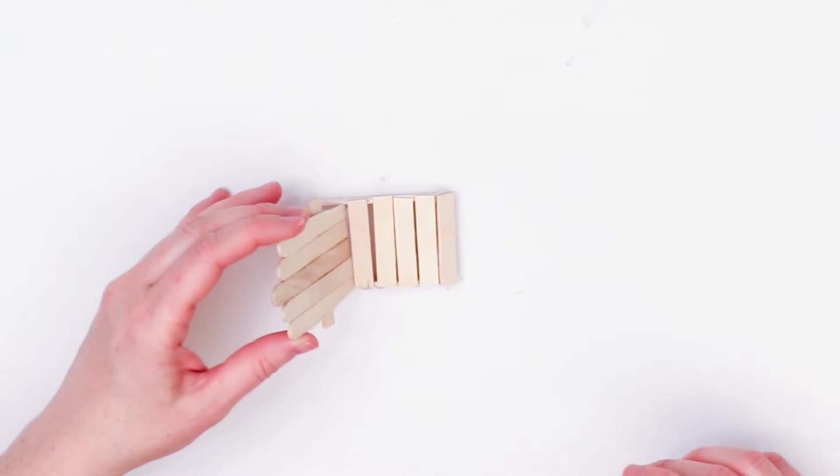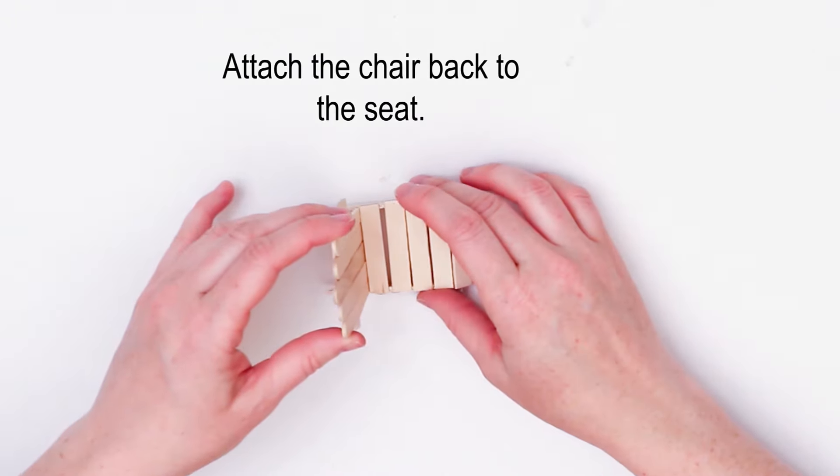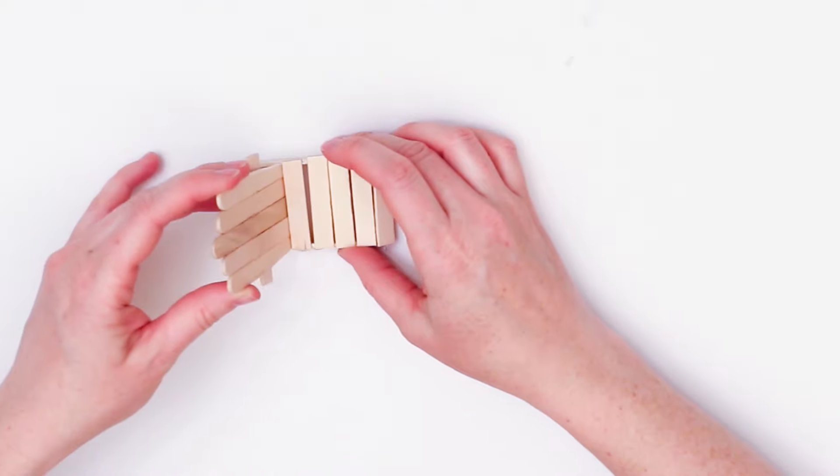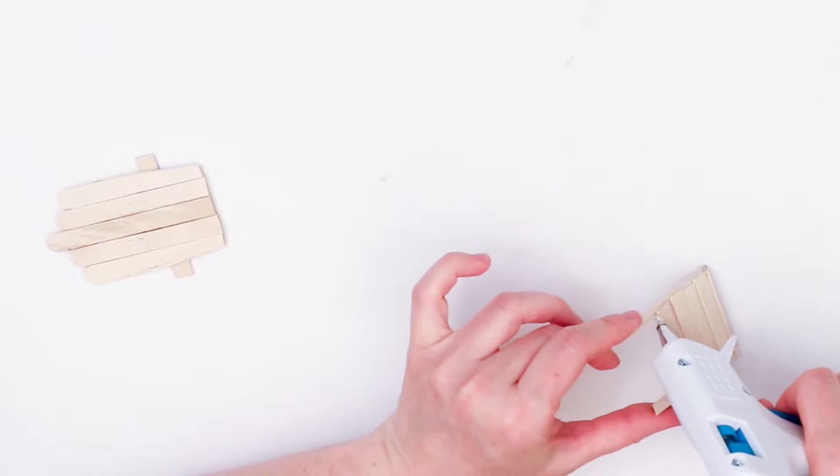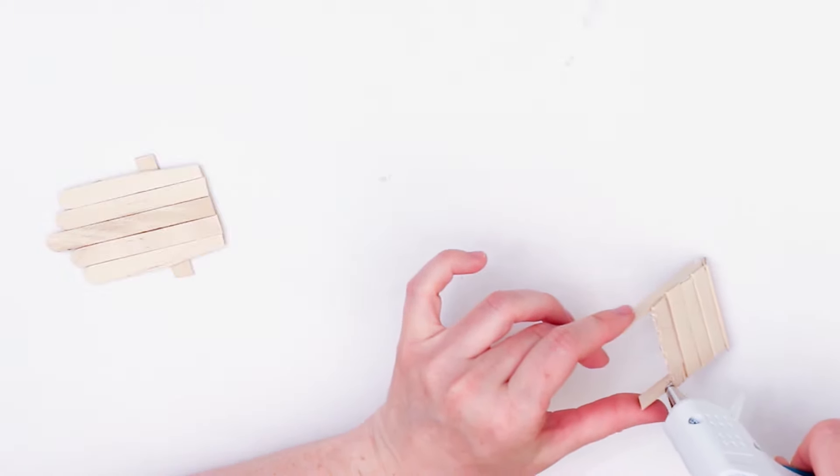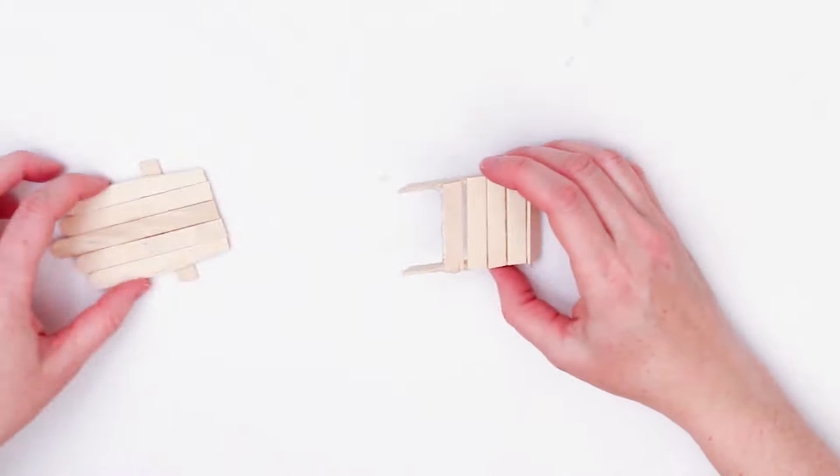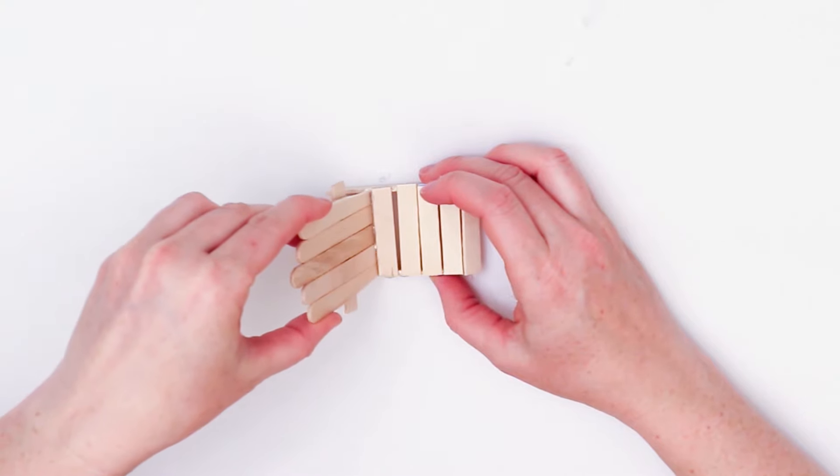Now it's time to glue the chair back onto the seat. So you're just going to put a little bit of glue and hold it all together until the glue hardens a bit. You want to be careful with the chair seat now because it's not quite sturdy yet until you assemble the arms.